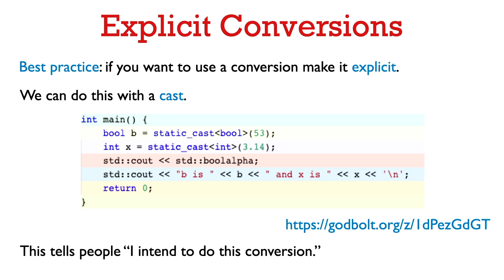So this just communicates that, hey, I know that there's a conversion happening there, and I want it to happen. I'm aware of it, and I intend it, and anyone who reads our code now knows that, oh yeah, this person wants to do that. It's not just an accident that they weren't aware of.